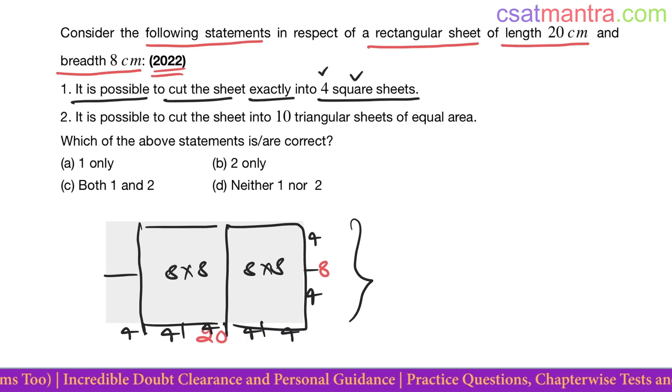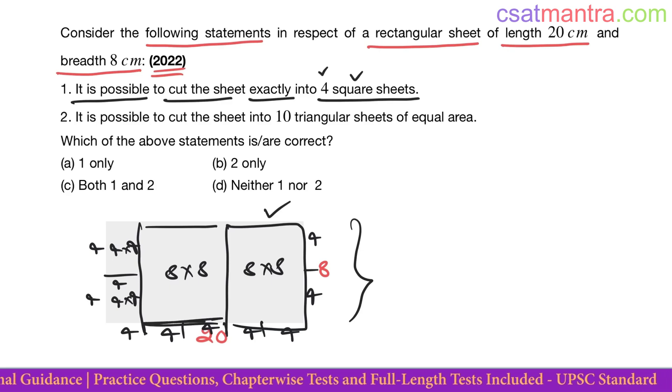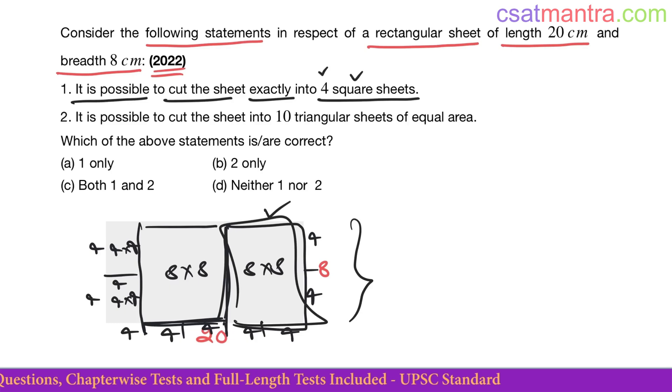Now if you see this is 4, this is 4. 4 by 4, 4 by 4. So yes, this is square sheet because this is 8, this is 8 centimeter. This is also square sheet, this is square sheet, this is square sheet. So it is possible to cut the sheet exactly into four square sheets.